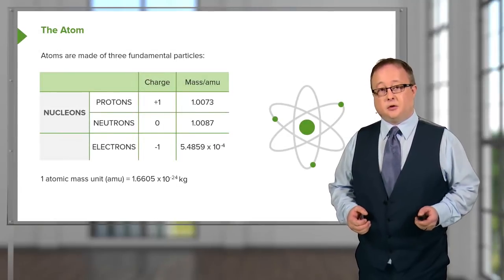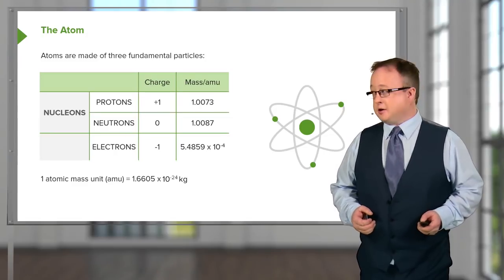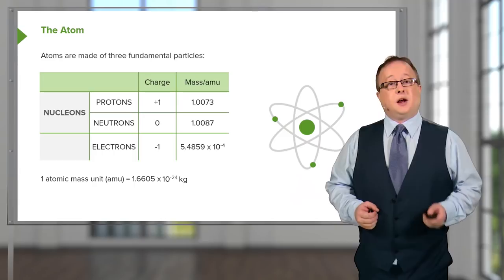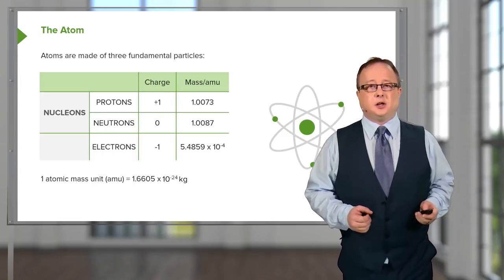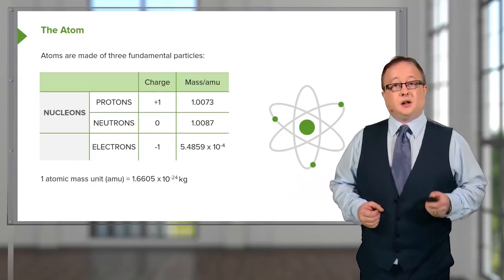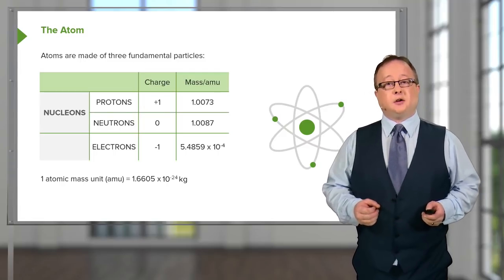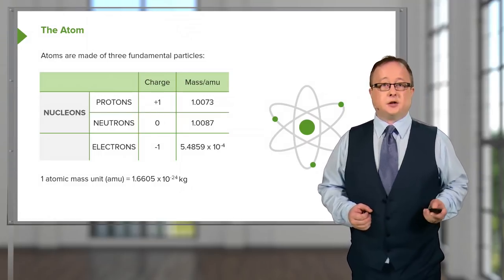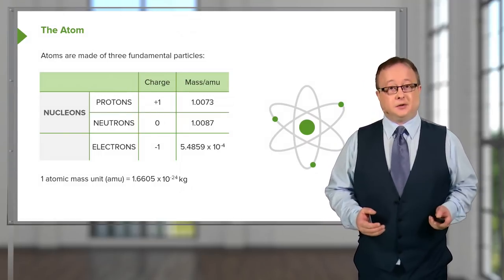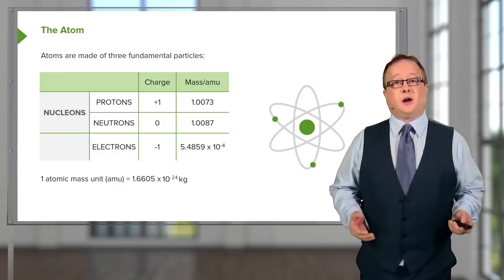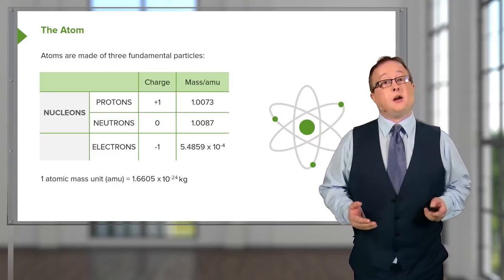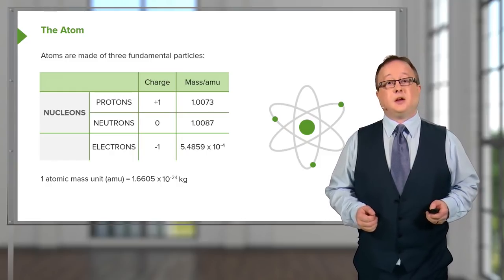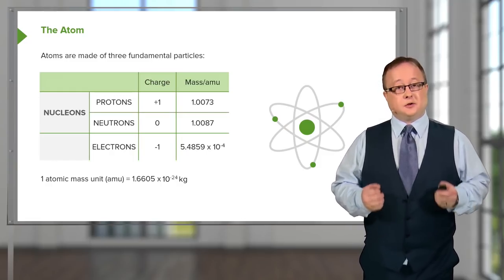Worthy of note is the third entry — the electron. Electrons have a charge of minus one but they have a substantially smaller mass. The mass of an electron is given relative to an AMU of 5.48 × 10⁻⁴. However, the reality in kilograms is that an electron has a mass of 9.11 × 10⁻³¹ kilograms — very much smaller than those nucleons.